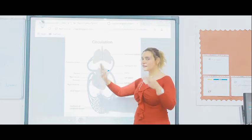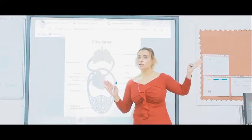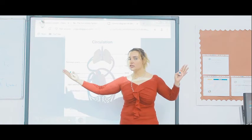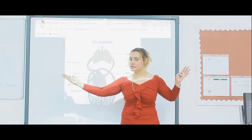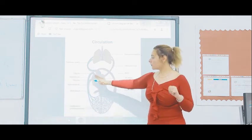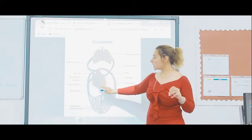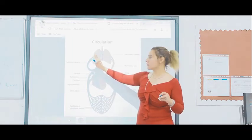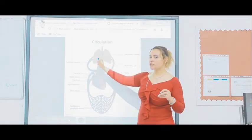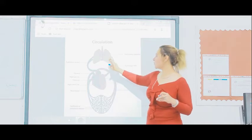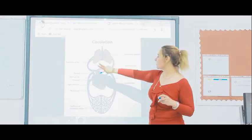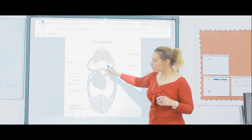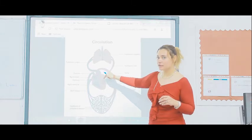The left side of the heart contains oxygenated, clean, and nourished blood. The right side of the heart contains deoxygenated blood which contains some wastes. From the right ventricle, the blood is sent to the pulmonary artery for exchange of gases. Then it is returned through the pulmonary veins to the left atrium.